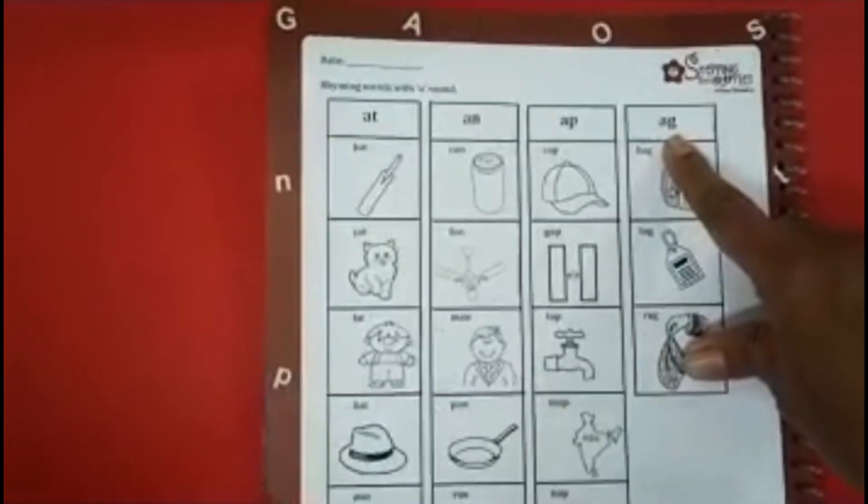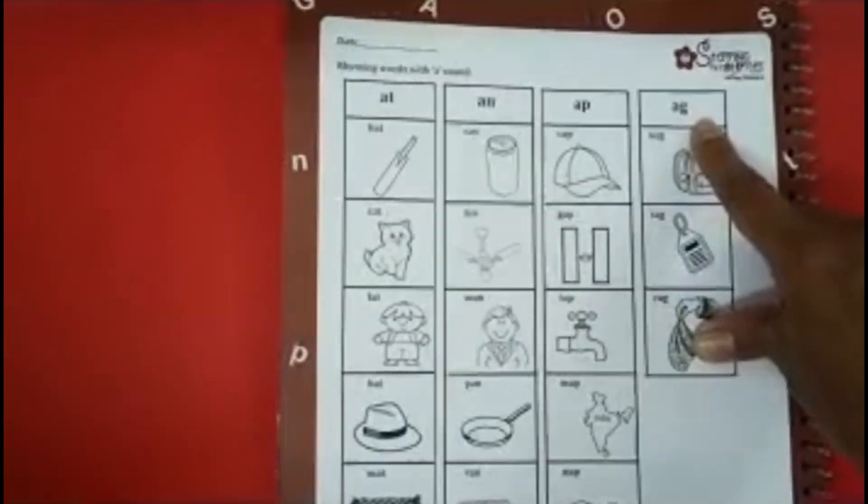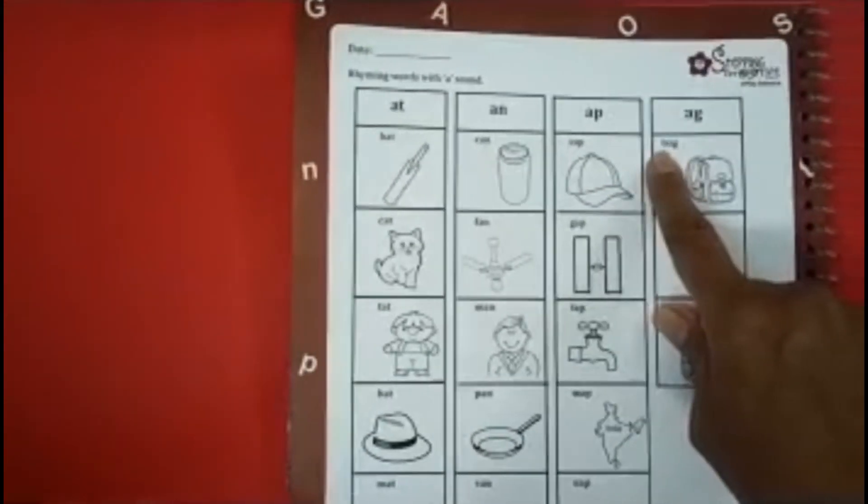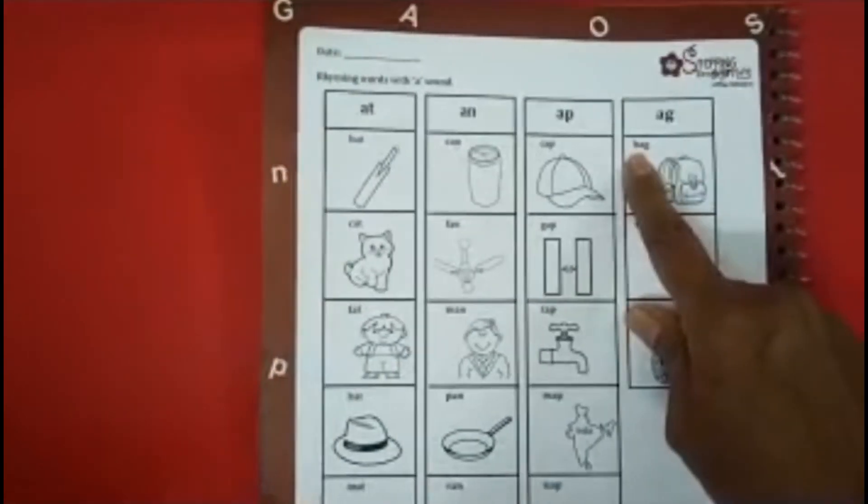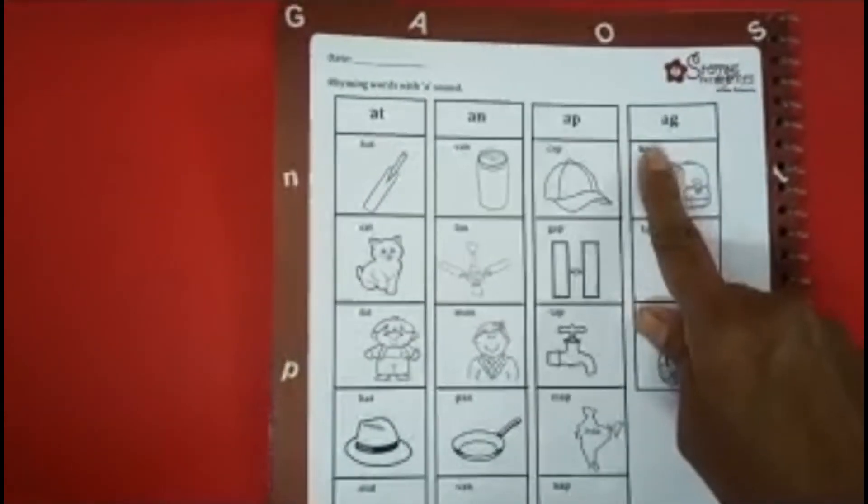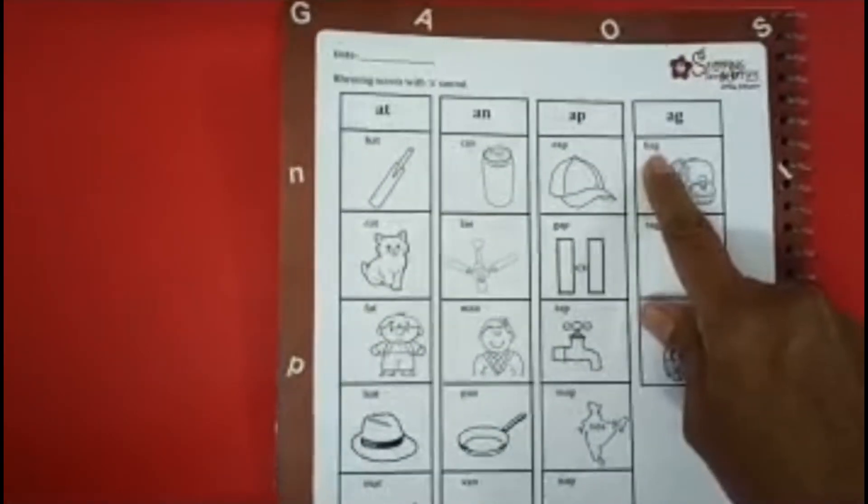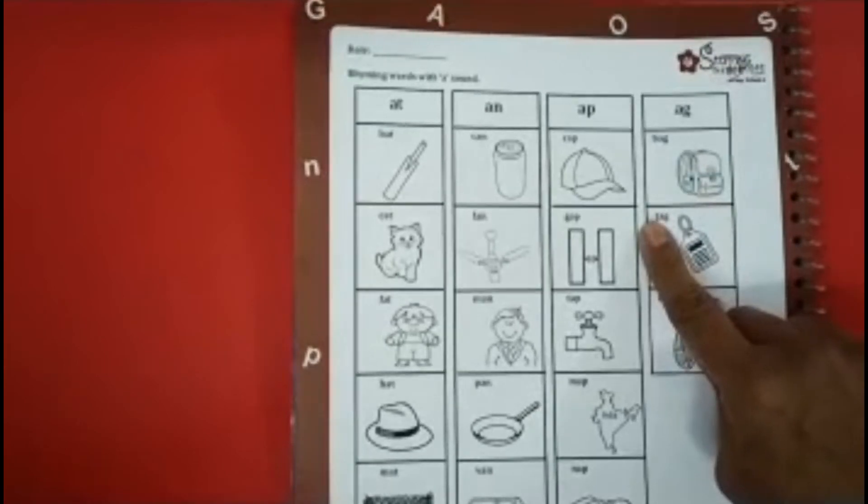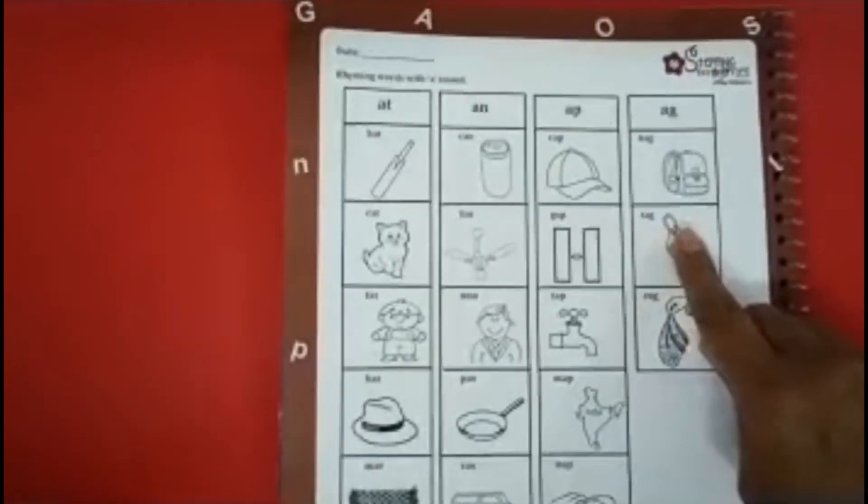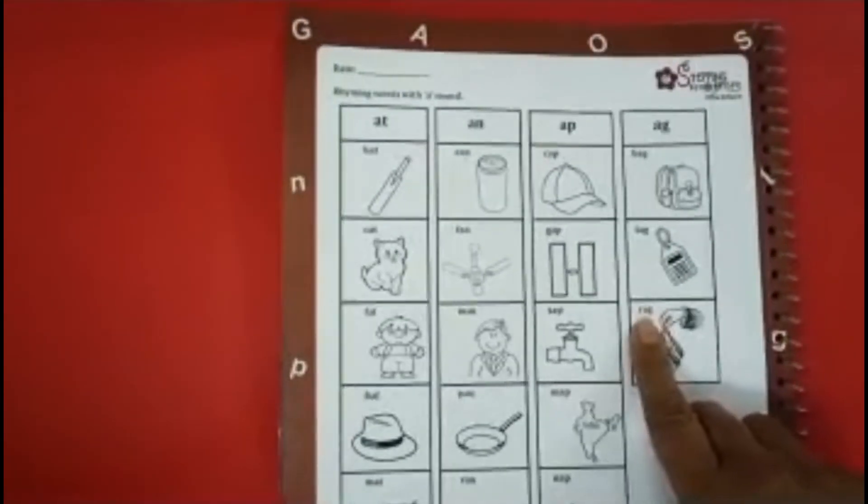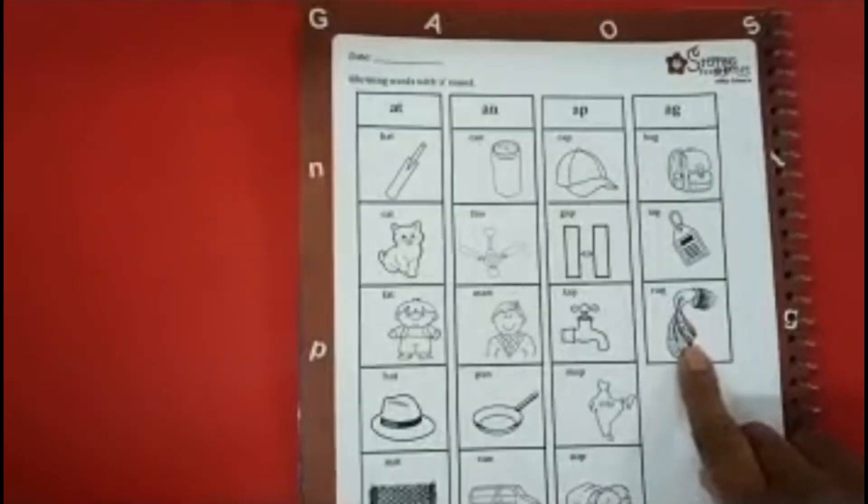These are, AG, A, G, AG sound words. This is bag. So we will read it as B says B, A says A and G says G. B, A, G, bag. T, A, G, tag. R, A, G, rag.